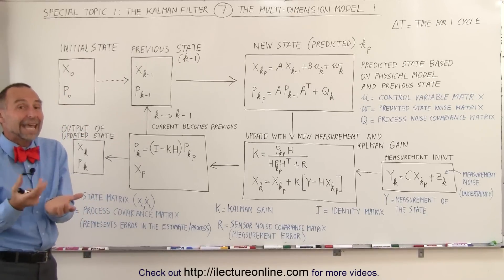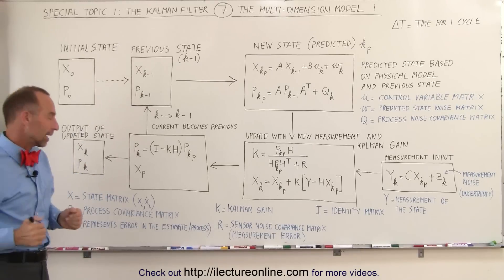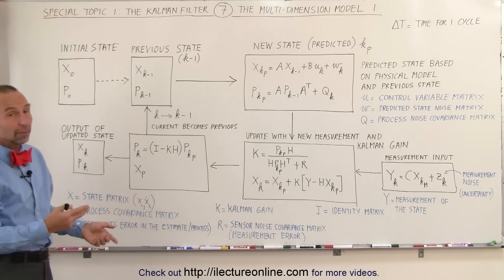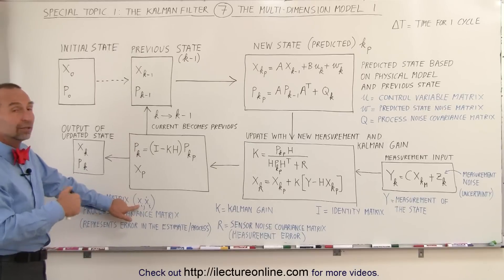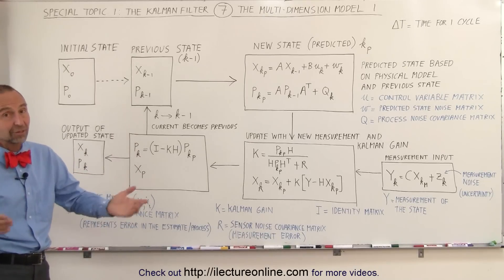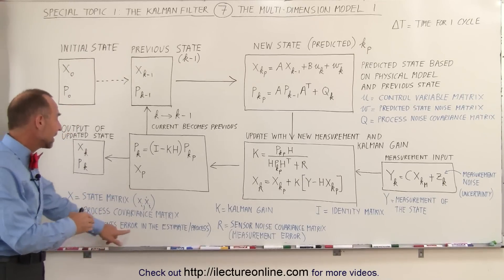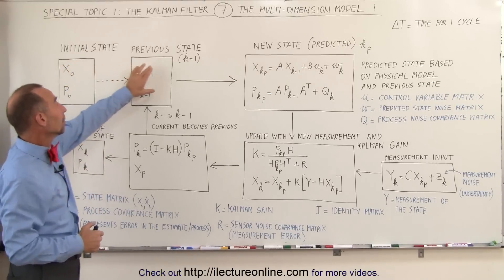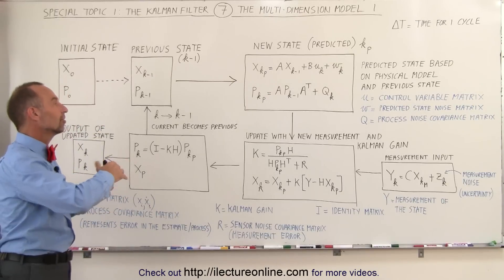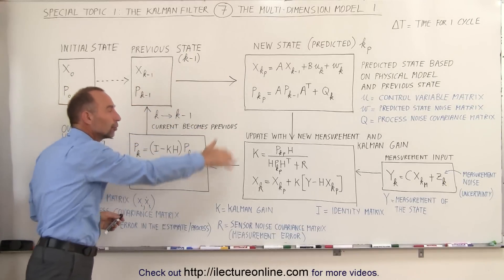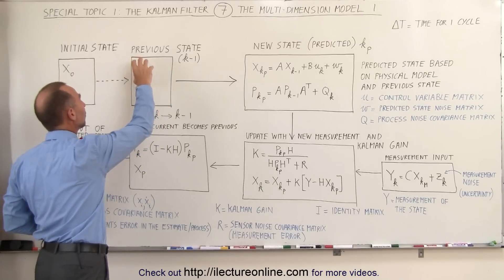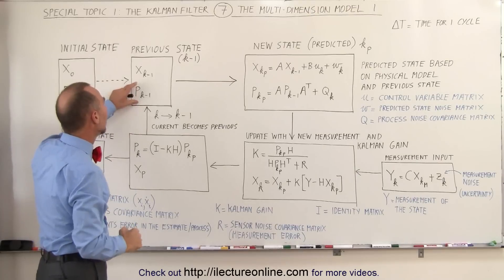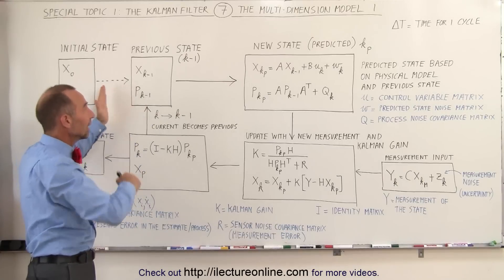The state matrix simply contains typically the position and velocity of the thing you're trying to track. It can be one-dimensional, two-dimensional, or three-dimensional. In two dimensions you have x and the velocity in the x direction. In two dimensions you can have x and y and the velocity in x and y. In three dimensions you have position in x, y, and z and velocity in x, y, and z — giving you a six-by-six matrix. The process covariance matrix represents the error in the estimate, which we track as we go through the process. We start with some initial state, and that becomes the previous state; as we iterate, the current state becomes the previous state.